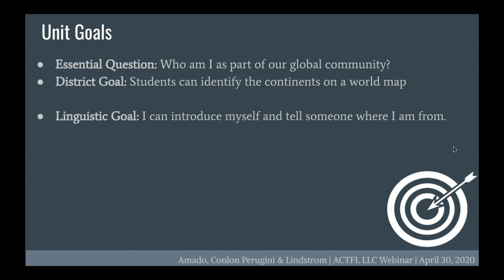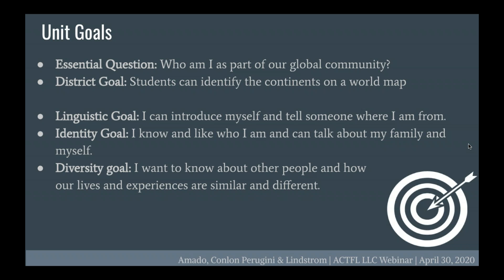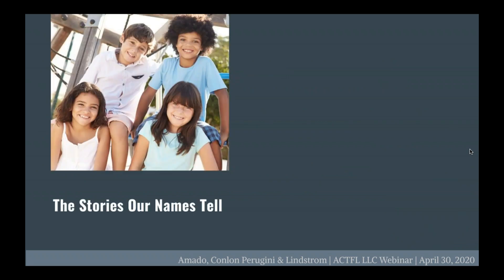I started with a linguistic goal: I can introduce myself and tell someone where I'm from. Then I looked at the Teaching Tolerance standards and added an identity goal: I know and like who I am and can talk about my family and myself. And a diversity goal: I want to know about other people and how our lives and experiences are both similar and different. I give students all three goals — linguistic, identity, and diversity — in English so they know why we're doing the things we're doing, though I always refer to and discuss them in Spanish.